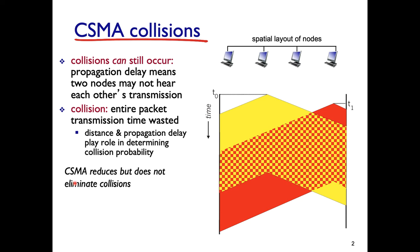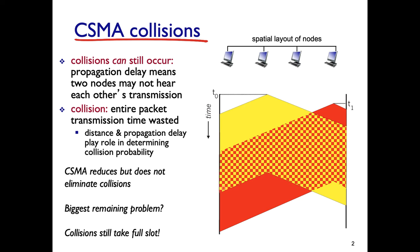CSMA reduces collision probability but cannot eliminate it. The remaining problem is that collisions still waste the entire transmission slot — the full frame is transmitted even though a collision occurred early on.